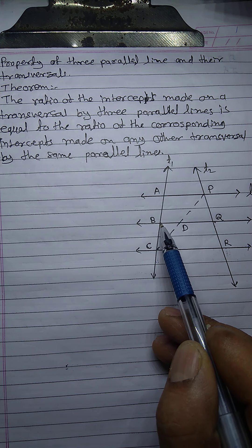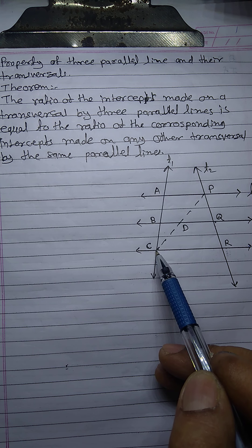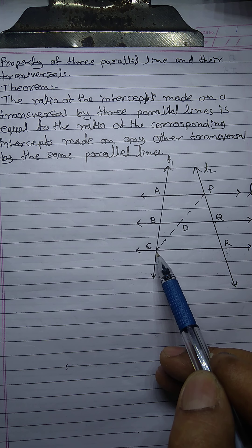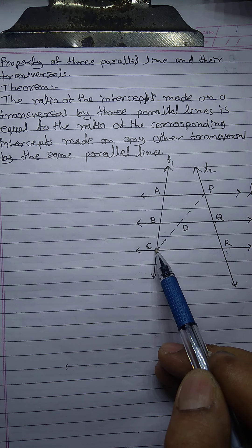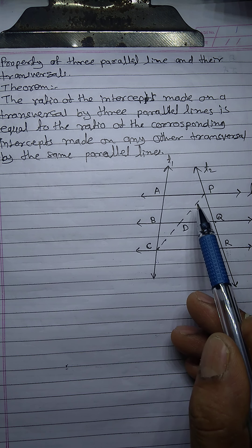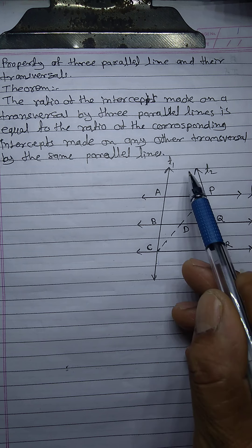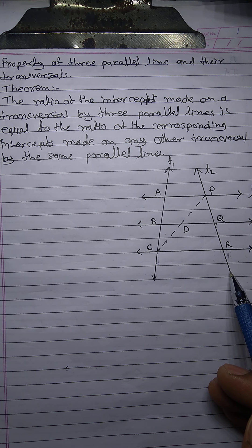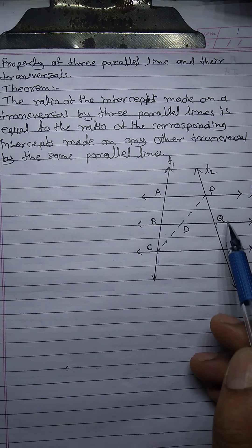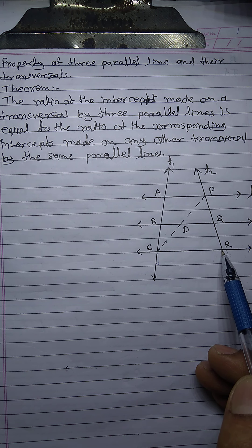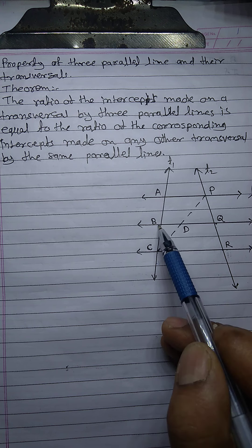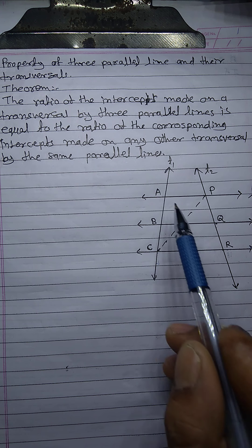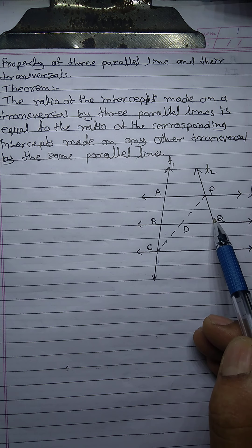The transversal T1 intersects the parallel lines at points A, B, and C, giving the ratio AB upon BC. The other transversal T2 intersects the parallel lines at points P, Q, and R, giving the ratio PQ upon QR. So the theorem states: AB upon BC is equal to PQ upon QR.